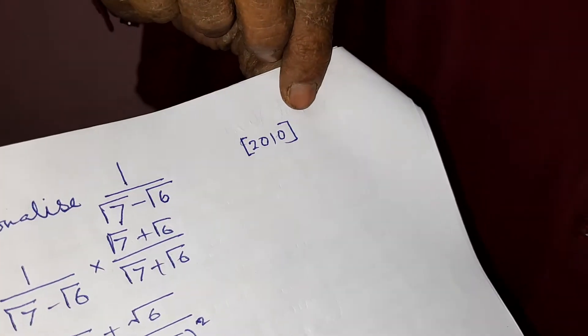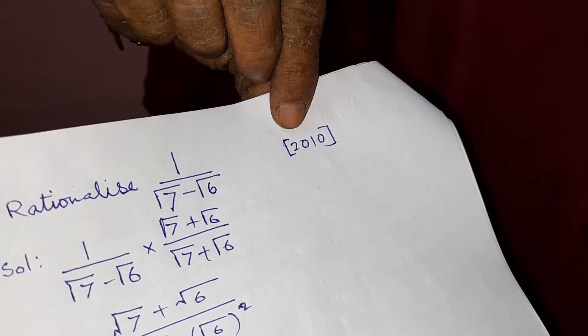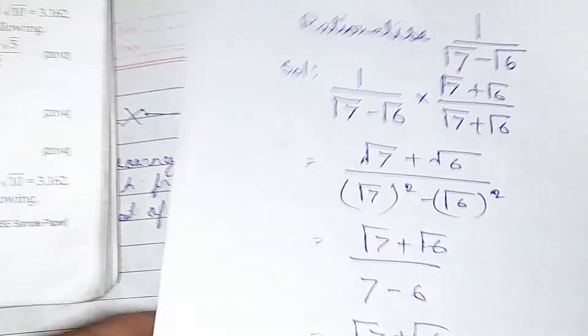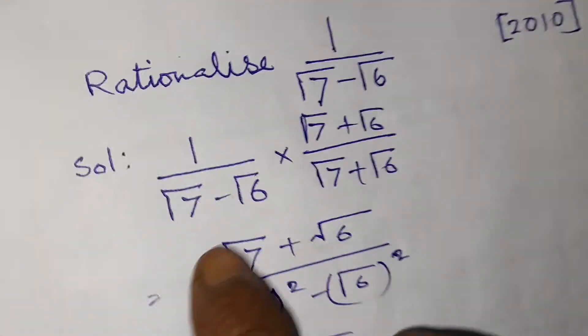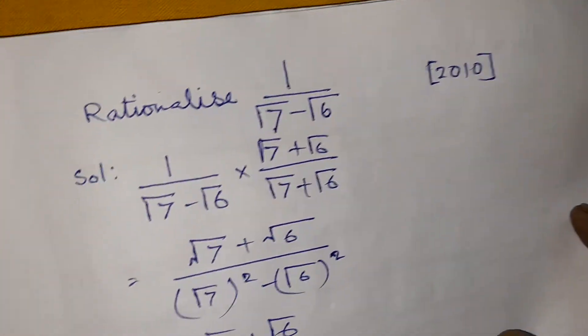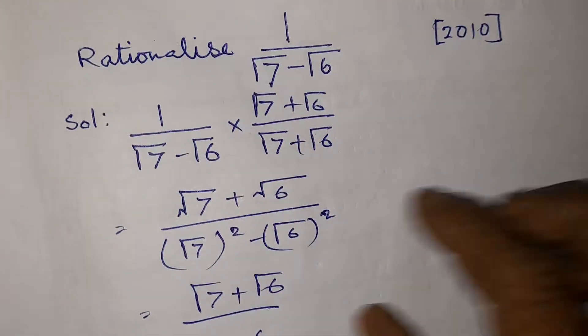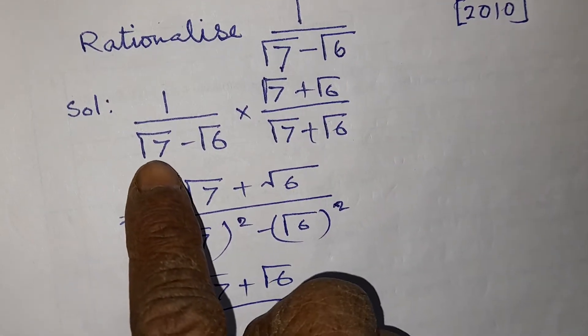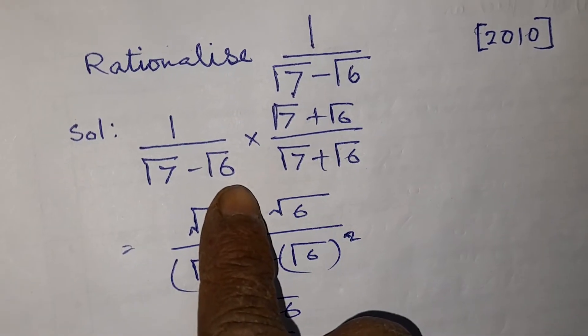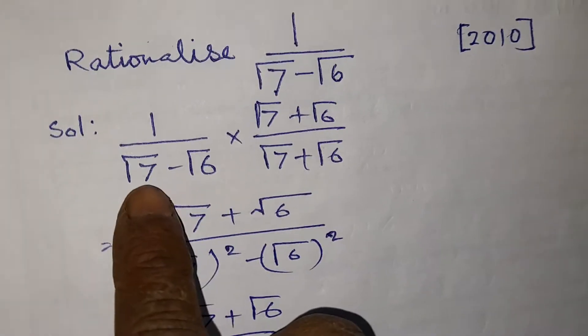This question was previously asked in the 2010 CBSE Board exam. Now we come to the solution. First of all, I will make you understand what rationalization is. Rationalization means we have to remove the root from the denominator.